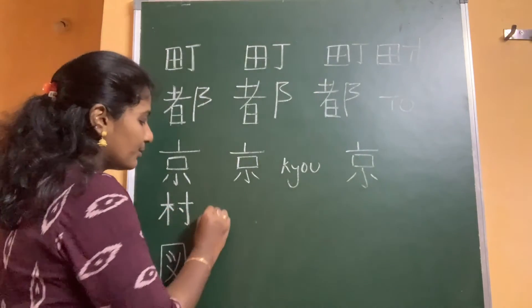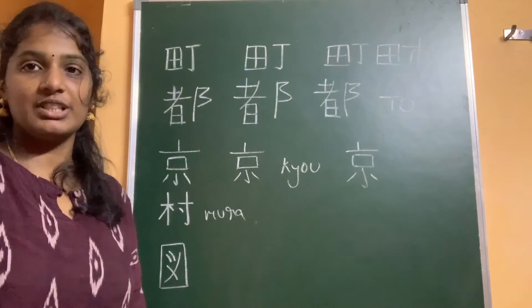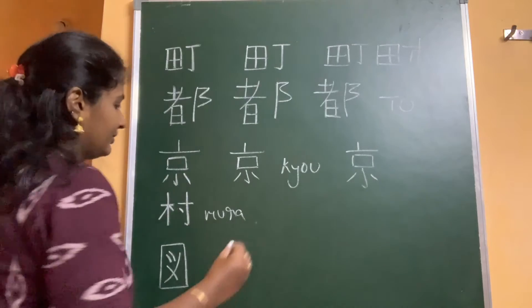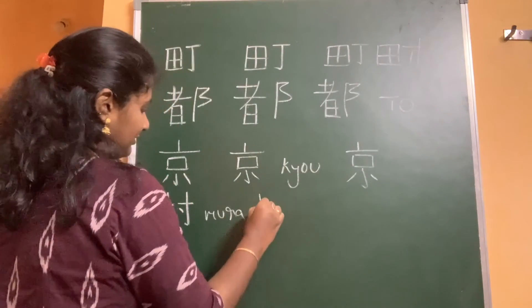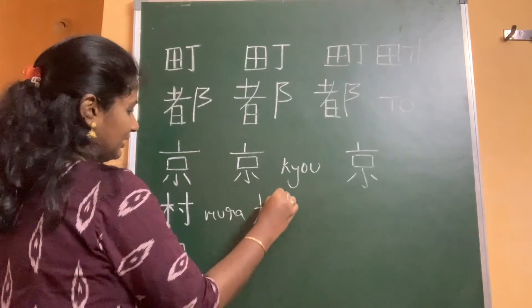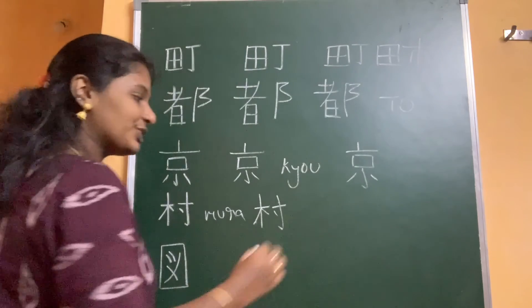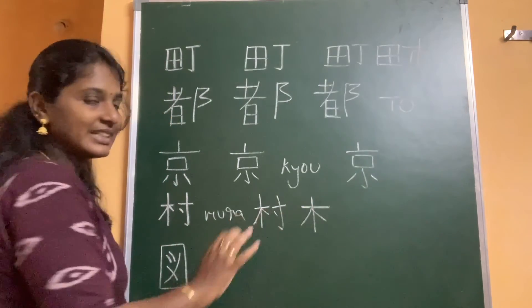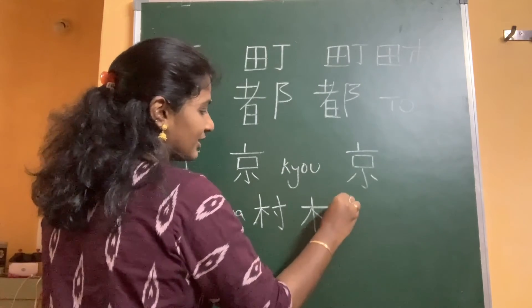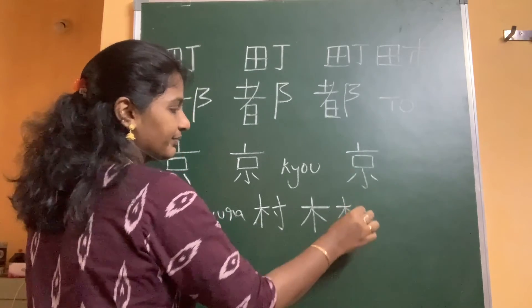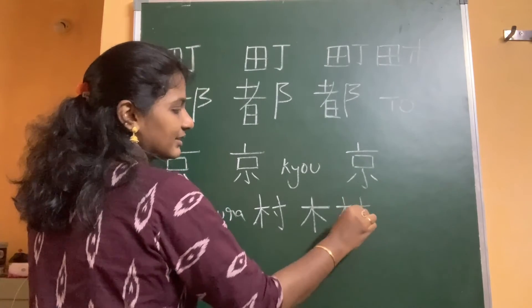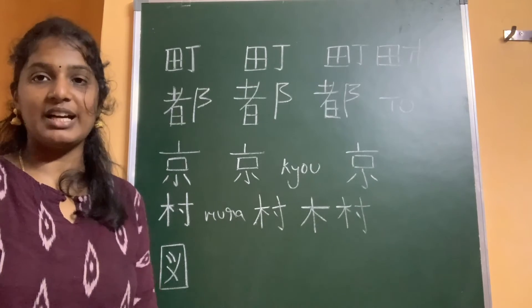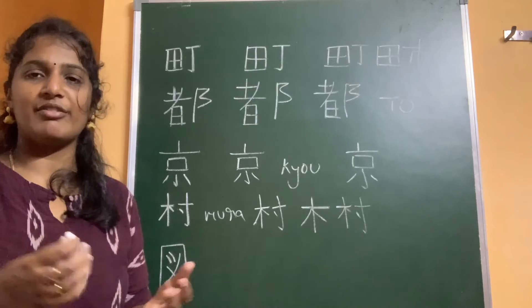This is the kanji that means Mura. Mura is village in Japanese. We have a village in Japan called Kimura, which means tree village. Drawing the kanji: first stroke, second, third, fourth, five, six and seven. So this is the kanji for ki, meaning tree, combined with Mura — Kimura. Kimura is also a very famous and well-known name in Japanese.